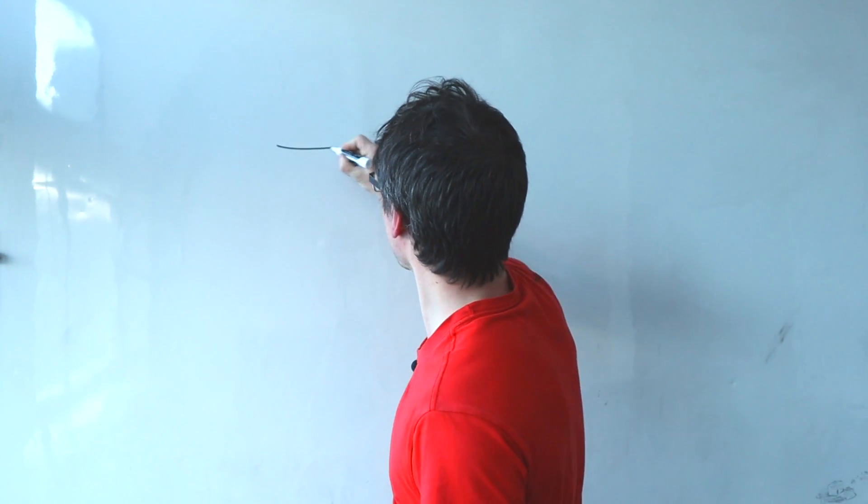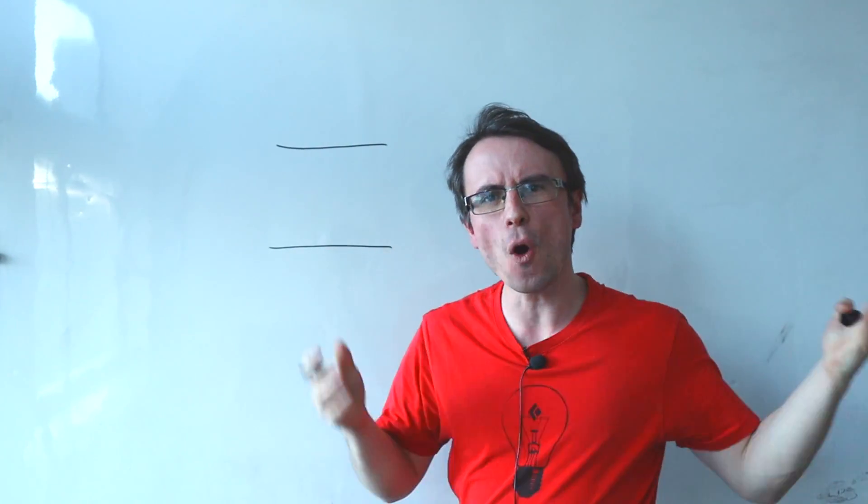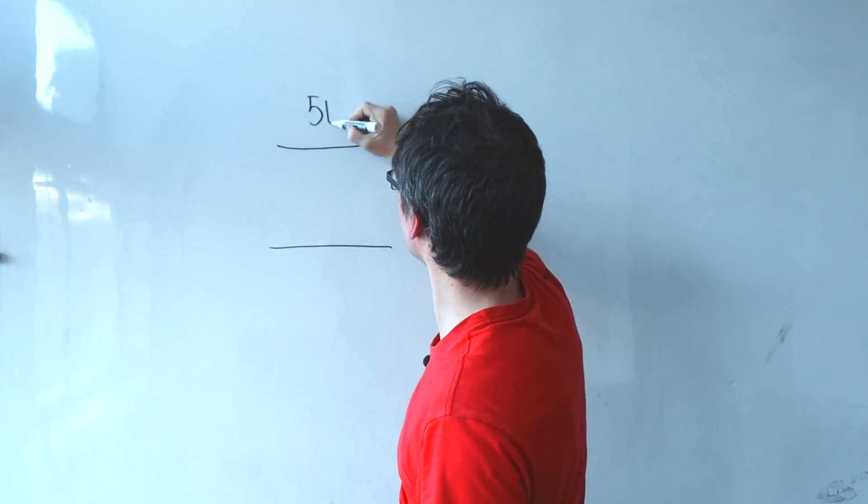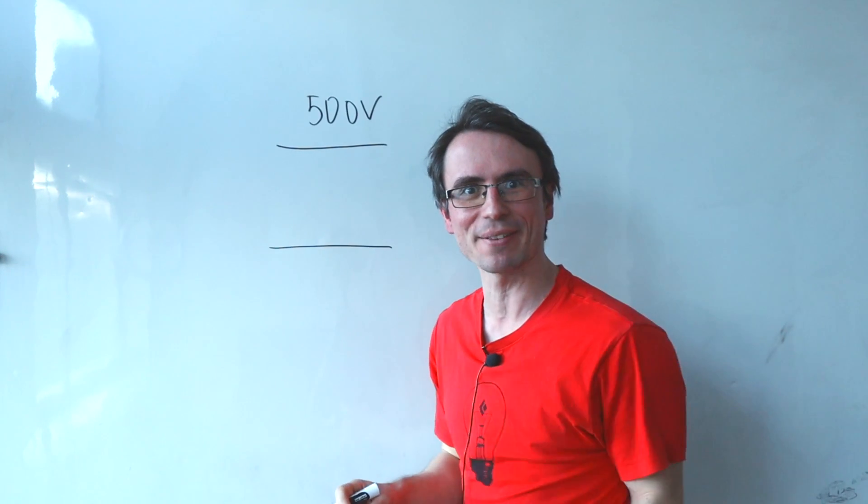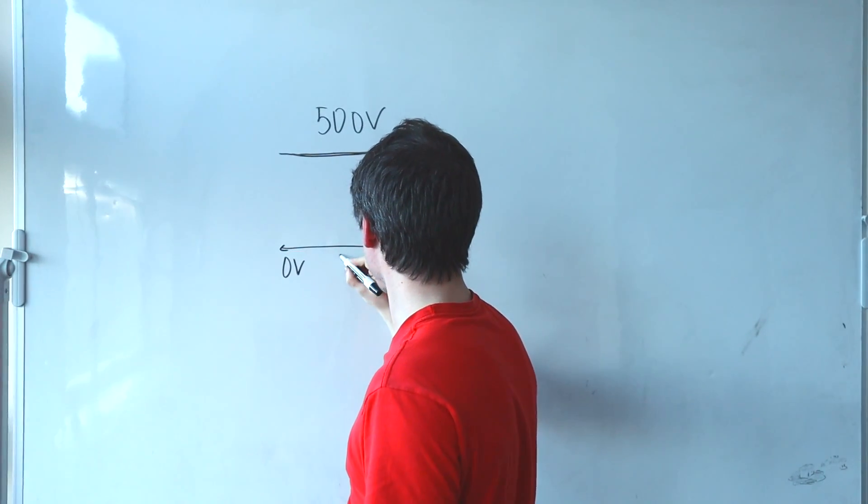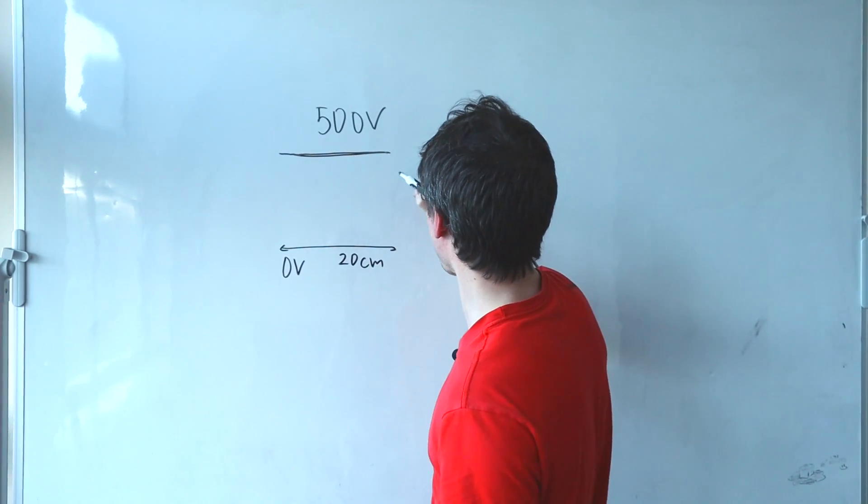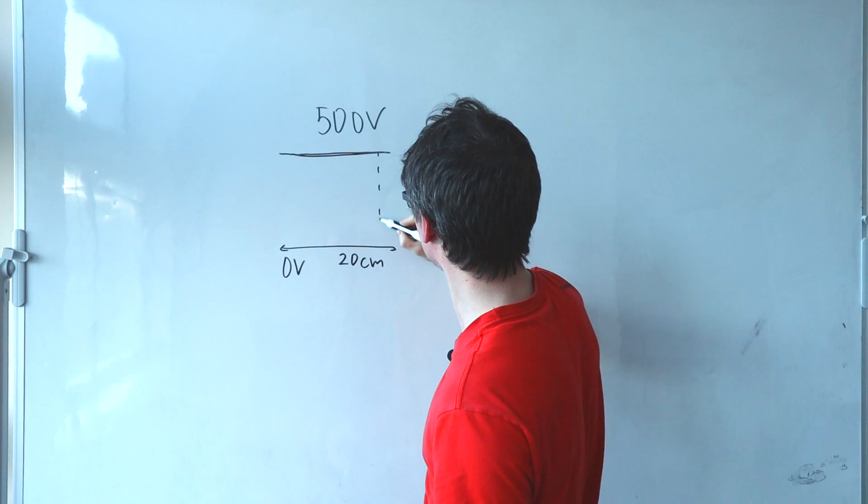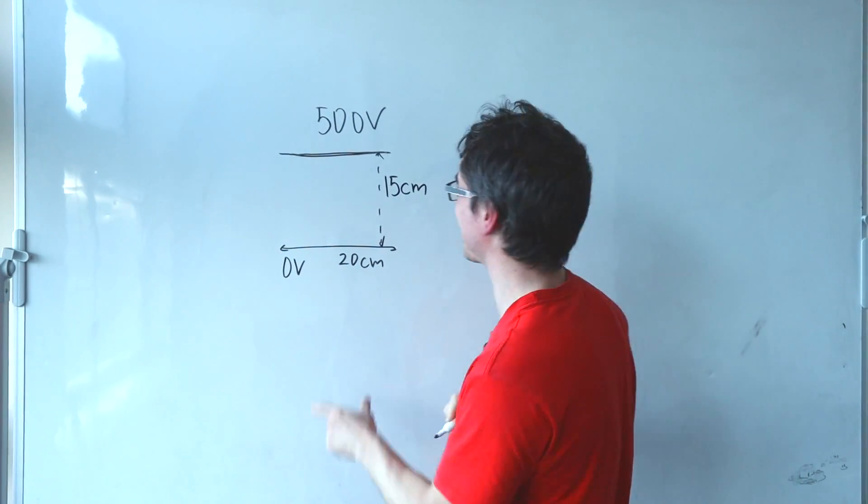So here are some parallel plates. Shall we say that the voltage between them is, I don't know, let's say 500 volts. We're going to be making up a problem live here. Let's say that the plates themselves are 20 centimeters long and shall we say that the distance between them is equal to 15 centimeters.